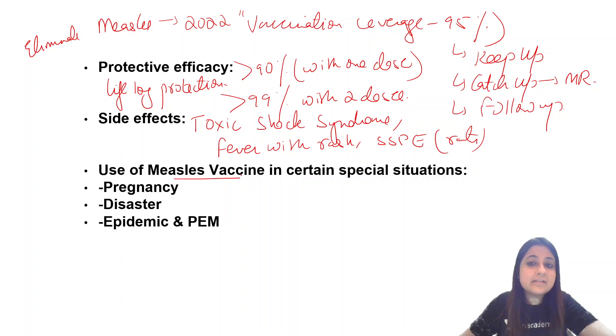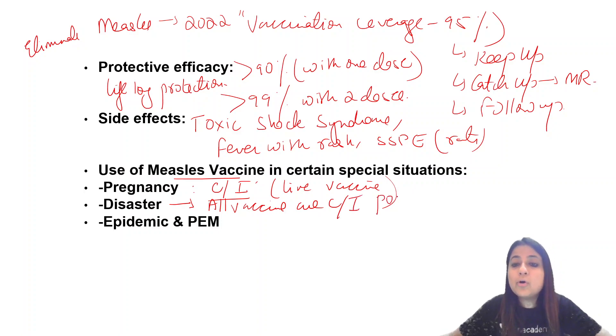Use of measles vaccine in special situations: Pregnancy is contraindicated because it's a live vaccine. All live vaccines are contraindicated in pregnancy except yellow fever. In disasters, all vaccines are contraindicated except to the victims, where you give measles vaccine.